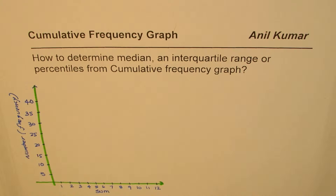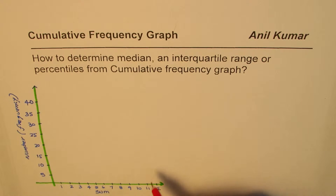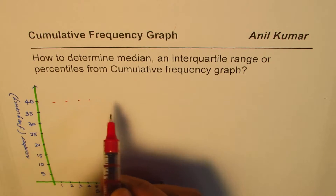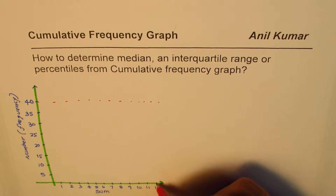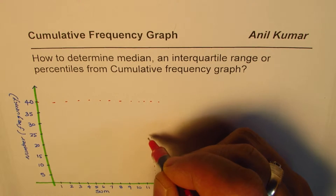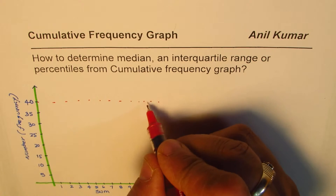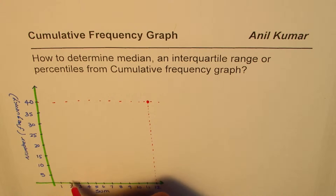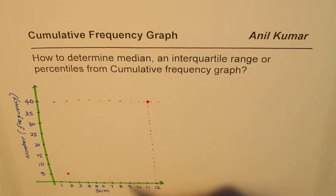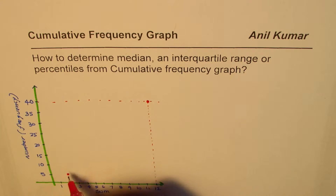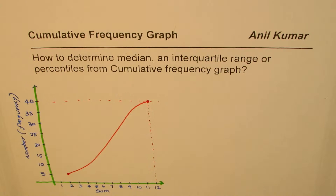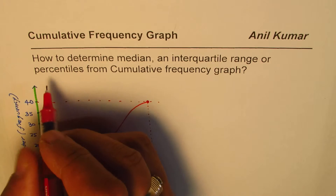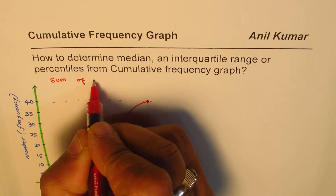At the end of the experiment we get a cumulative frequency graph. Since we did a total of 40 trials, the maximum cumulative frequency is 40. Initially we got 5 as a sum only a few times, and the graph builds up from there, giving us our cumulative frequency graph for the sum of a pair of dice.